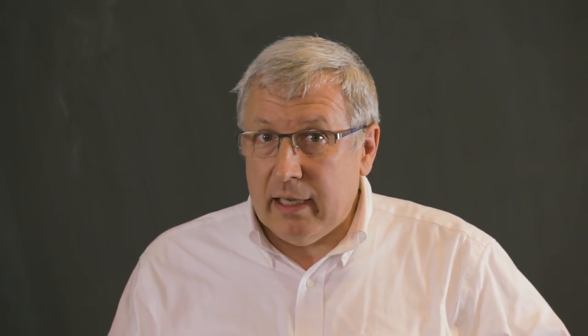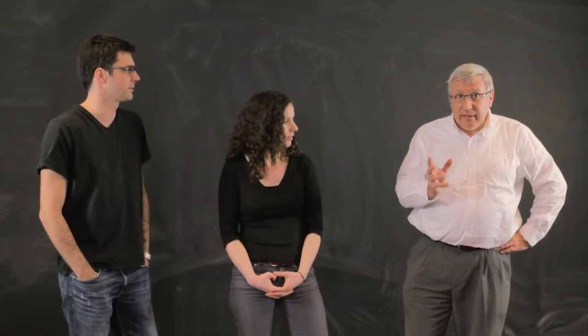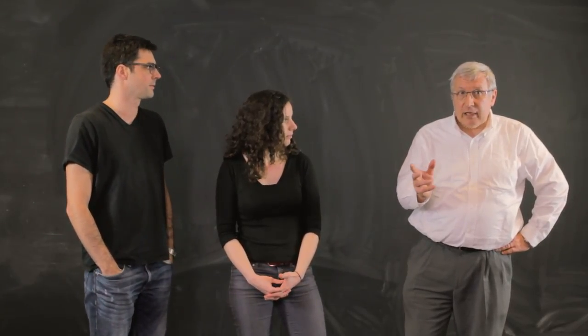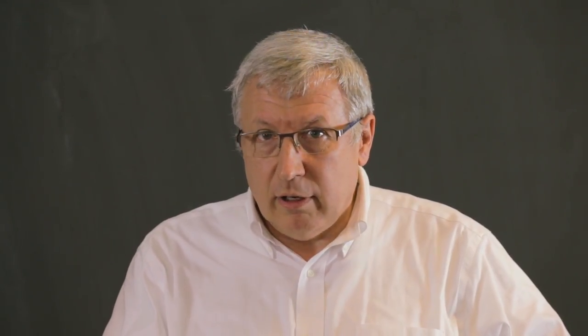In our metaphor, let us remind the image of the cat. The image of the cat was the model, and we have different types of models: the Schrödinger equation and the Hartree-Fock equation. It is like we have two kinds of lenses — a lens with very good quality, which is expensive, and a lens with poor quality, which is not expensive. So we have these two models.